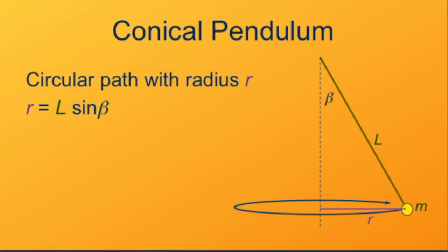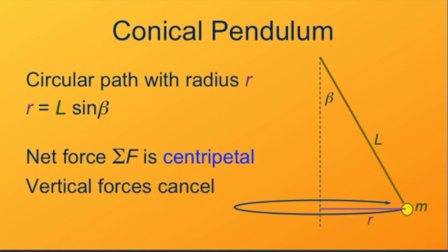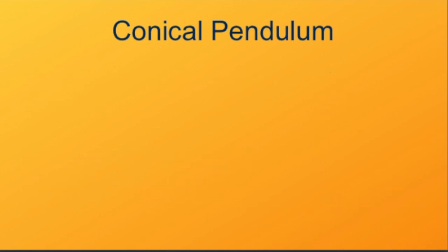Now the only force that's acting on this bob that has any horizontal component is the tension in the cable. So the tension's horizontal component must provide all of the centripetal force. The vertical forces have to cancel the weight down and the vertical component of tension. So let's make a free-body diagram for this situation.